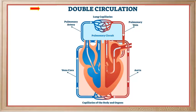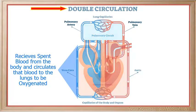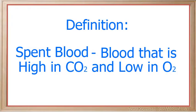The human heart is often described as two hearts that beat as one. The reason for this description is because the right side of the heart receives spent blood from the body and circulates that blood to the lungs to be oxygenated. Blood that is high in carbon dioxide and low in oxygen is often referred to as spent blood.